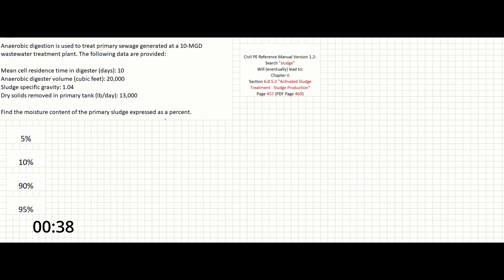In this problem, the first thing we're going to want to do is go to our reference manual. If we search sludge, this will eventually lead to chapter 6, section 6.8.5.3 called activated sludge treatment. If you go a little further down to page 457, you'll find a subsection called sludge production. It's here that we're going to need the equation that the reference manual provides.